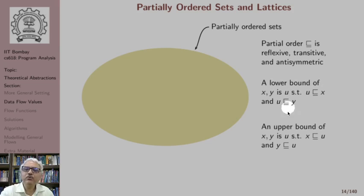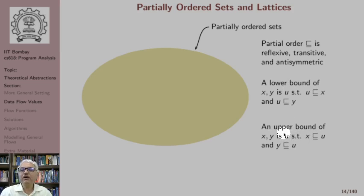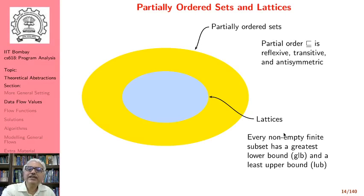Like a lower bound, we also define an upper bound of two elements x and y, which is an element u such that x is weaker than u and y is weaker than u. So when u is weaker than both x and y, u is a lower bound of x and y. When x and y are both weaker than u, u is an upper bound of x and y. Like this, we can define lower bounds and upper bounds of not just pairs of elements but sets of elements.